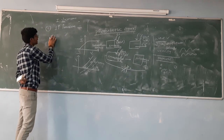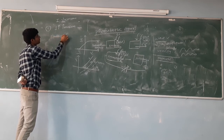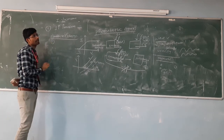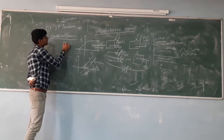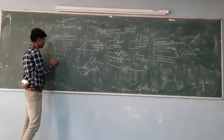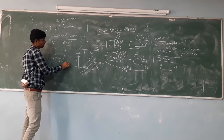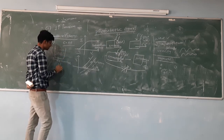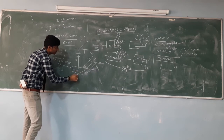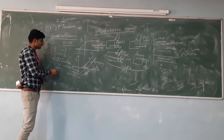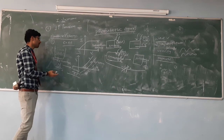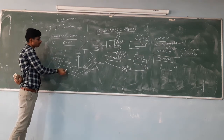Albert Einstein proposed the photon particle theory of light. He observed that Planck's formula E = hν, when applied similarly to kinetic theory — where a container has a finite number of particles — gives a total energy divided by hν, yielding a number of particles. Einstein noticed a mathematical similarity: just as kinetic theory gives a number of particles, Planck's formula gives a number. He thought light may not be like a wave but like a particle.